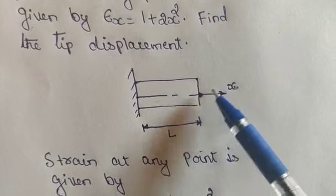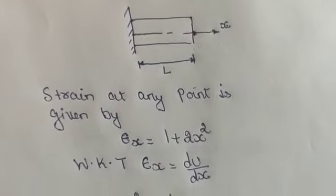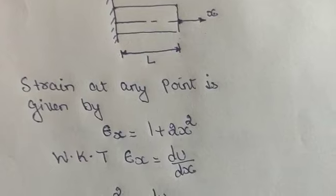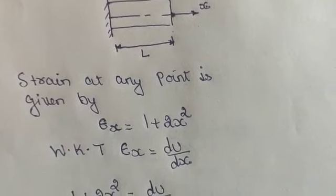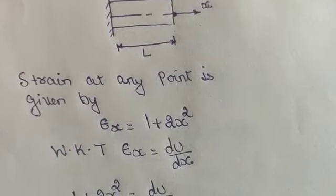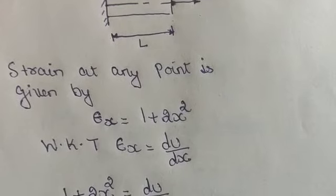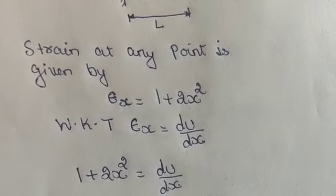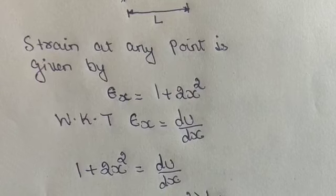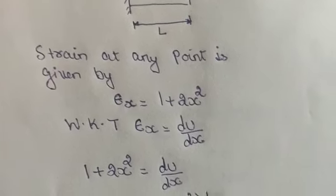At any point you can find out the displacement. Strain at any point is given by epsilon x equals 1 plus 2x squared. That has been given in the statement itself. We know that according to theory of elasticity, epsilon x equals du by dx.